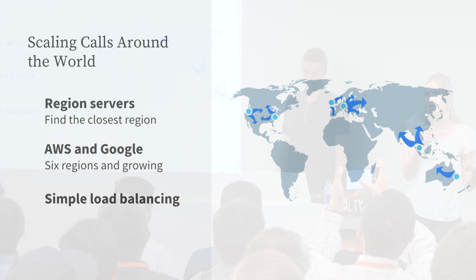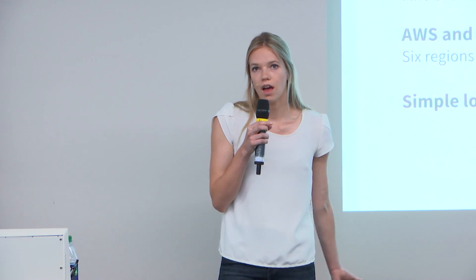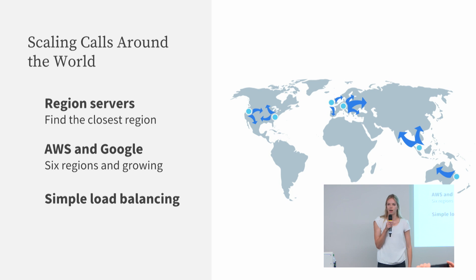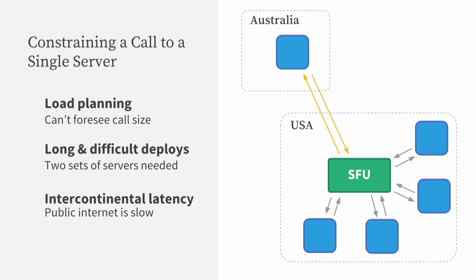I'm going to talk a little bit about how we scale calls around the world. We're in six different regions around the world, using AWS and Google, and we have something called region servers. Whenever our client wants to connect to one of our media servers, they ask a region server what the closest media server is, then connect to that one. We use a simple load balancing algorithm so that whoever starts the call gets the least-loaded server. One problem with this is that we're only using one SFU to host a call. We can host up to 15 people, but when someone starts a call we don't know how many users will join — a bunch of calls could all grow to 15 people on one server, making load planning very difficult.